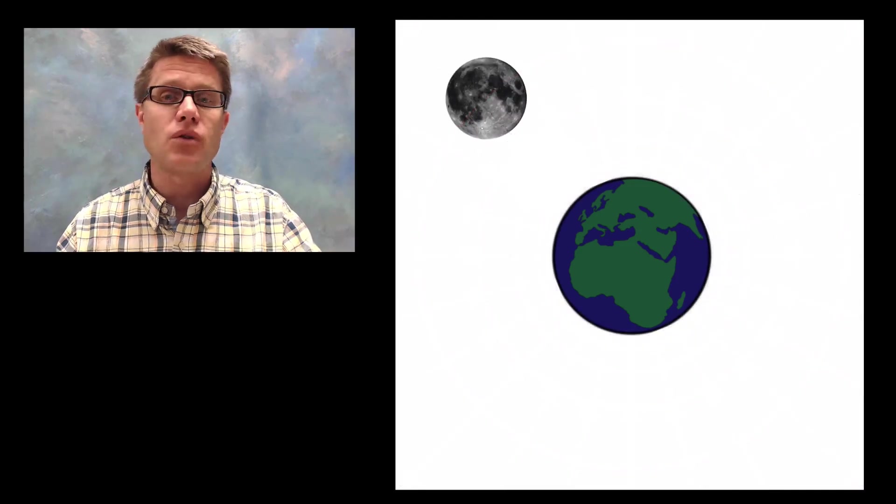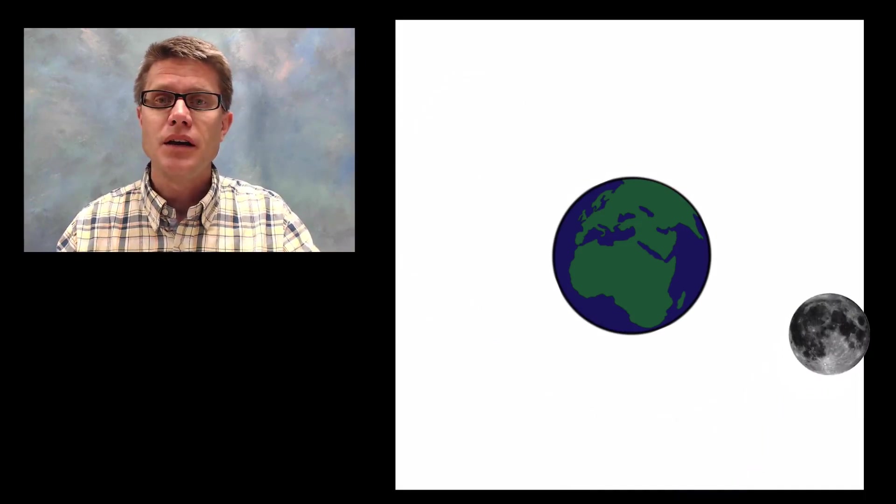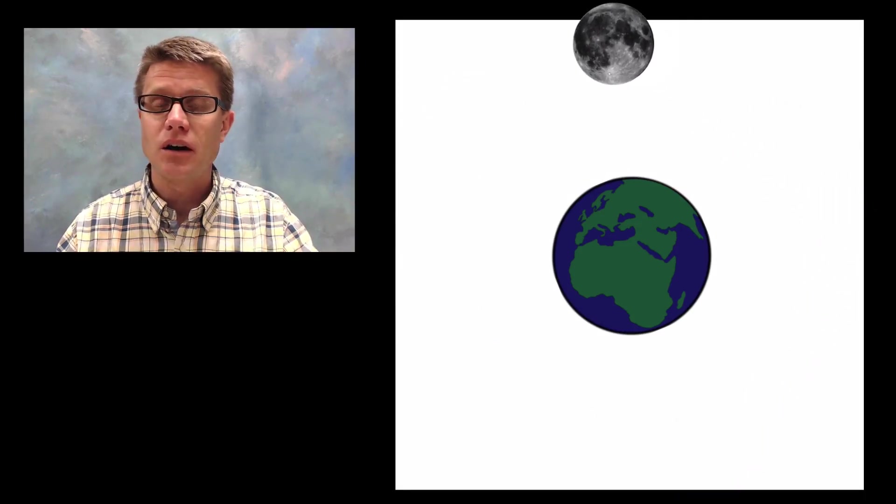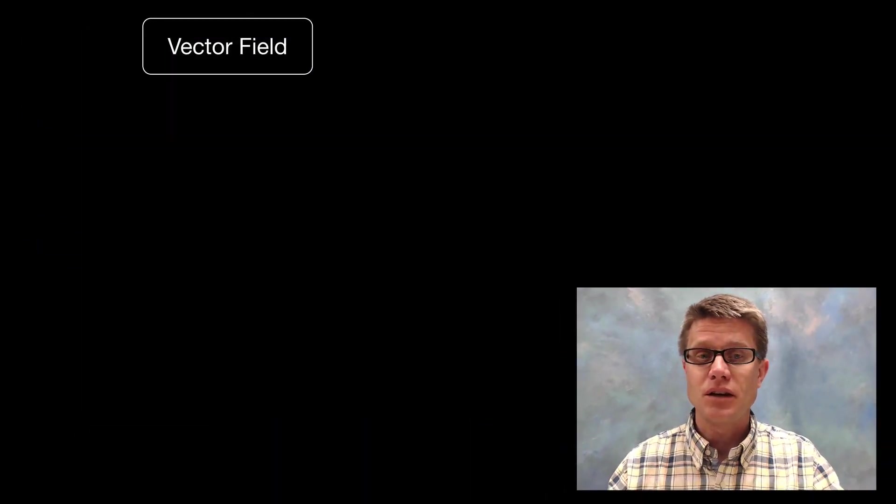Now we know that the moon doesn't just crash into the earth. We know that it orbits around the earth. The reason why is that it has a certain amount of velocity, and that velocity allows it to just keep missing the earth.